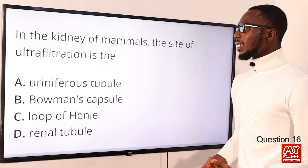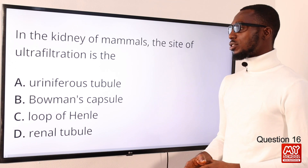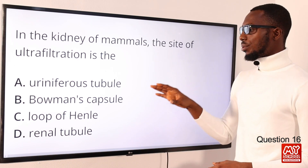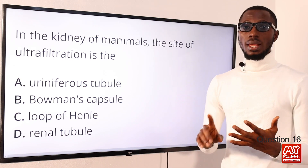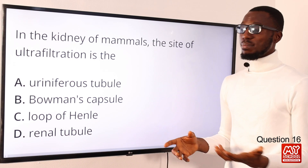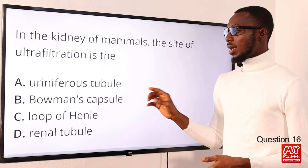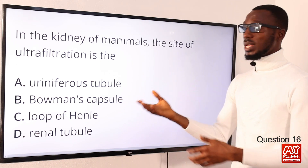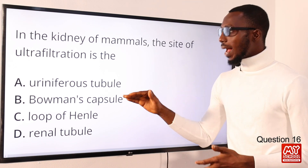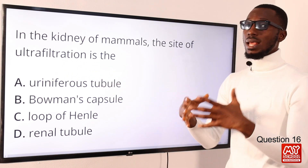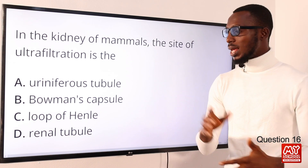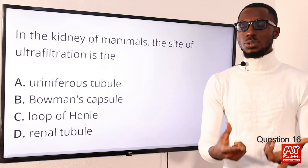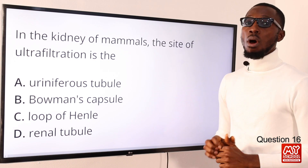Question 16: in the kidney of mammals, the site of ultrafiltration is the Bowman's capsule. As blood flows through the glomerulus, small molecules — water, urea, mineral salts, plasma solutes, and sugar — pass through the one-cell-thick wall of the capillaries and the Bowman's capsule into the capsular space under high pressure. This acts as a filter against bigger molecules like plasma proteins and blood cells. Ultrafiltration takes place here, while at the loop of Henle you are looking at selective reabsorption. The correct option is option B for Bowman's capsule.